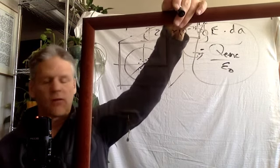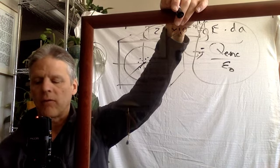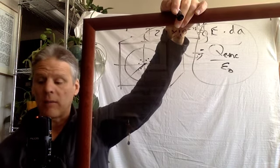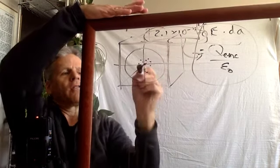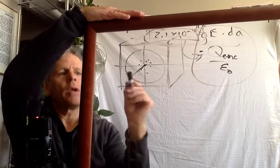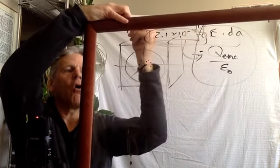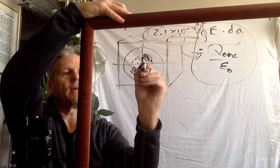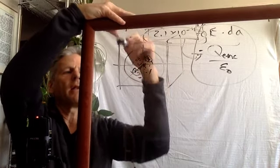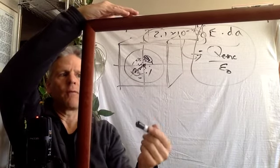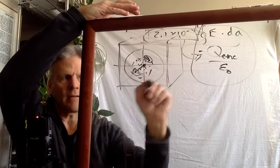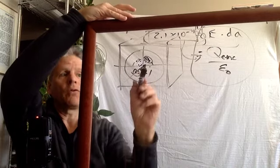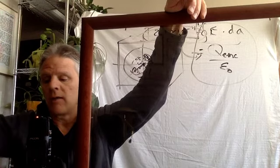Number three: in the previous question, what is the strength of the electric field everywhere on the surface of the 4 centimeter radius Gaussian sphere? Look at these 17 separate charges — we do not know anything about their symmetry. They could all be clustered in one spot or spread out evenly. We have no idea what the symmetry is. Therefore, even though we know the flux through the surface, we cannot say anything about the electric field's strength at any given point. The answer is not enough information to say.